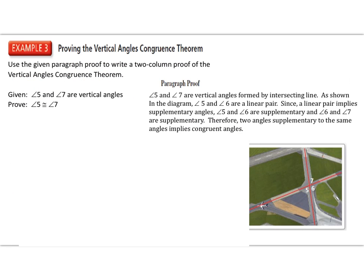For our next example, we go from a paragraph proof to a two-column proof. A paragraph proof puts together complete sentences explaining each step logically toward the goal. We start with the given: angle 5 and angle 7 are vertical angles formed by intersecting lines. As shown in the diagram, angle 5 and angle 6 are a linear pair. Since linear pair implies supplementary, angle 5 and angle 6 are supplementary, and so are angles 6 and 7. Therefore, by two angles supplementary to the same angle implying congruent angles, angle 5 is congruent to angle 7.